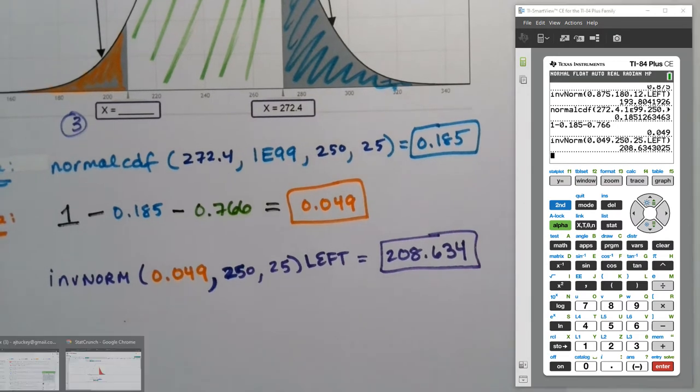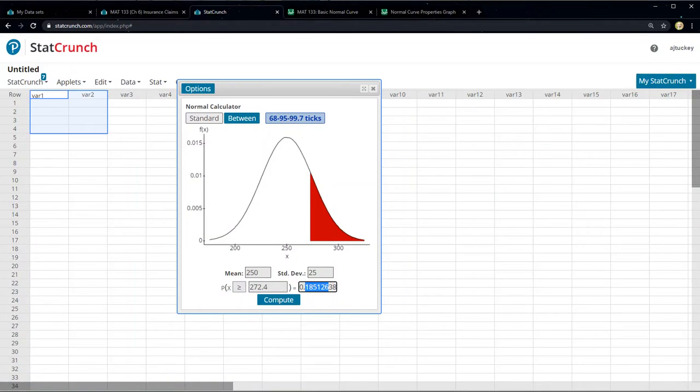In StatCrunch, you would tell it 250 and 25, right? But you don't know the x value, so you won't play with this. You will change this to a less than,